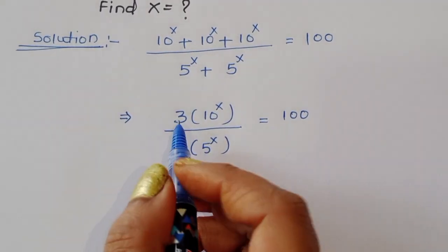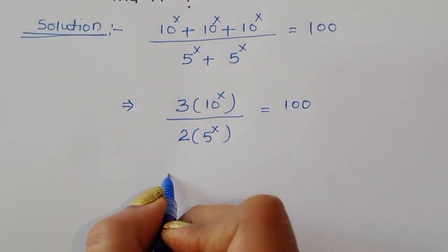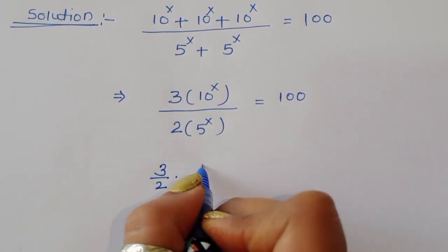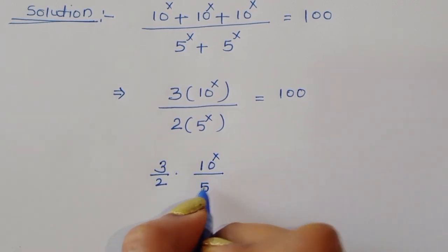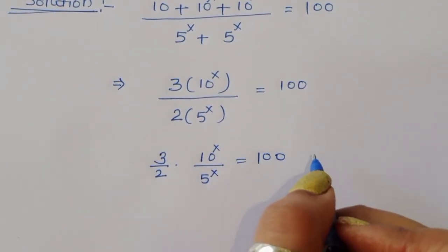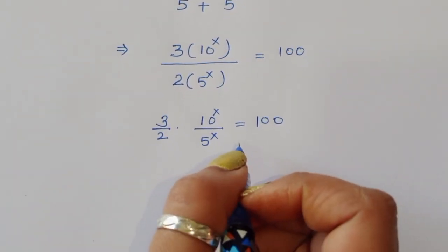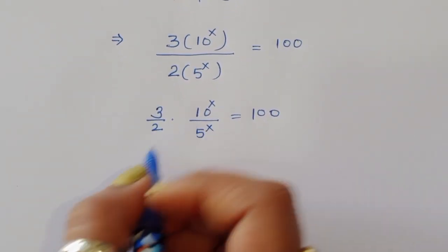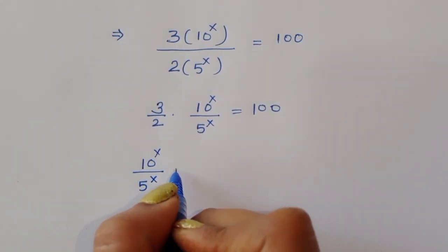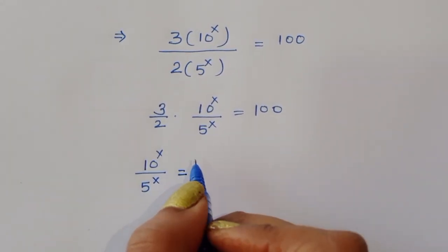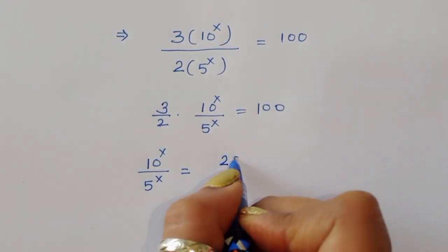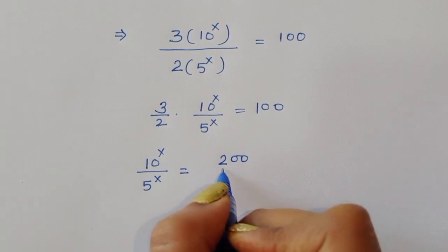Now, with 3 times 10^x, we separate the terms to get 3/2 times 10^x divided by 5^x, which is equal to 100. So we can write 10^x divided by 5^x. Now doing cross multiplication, we get 2 times 100, that is 200, divided by 3.